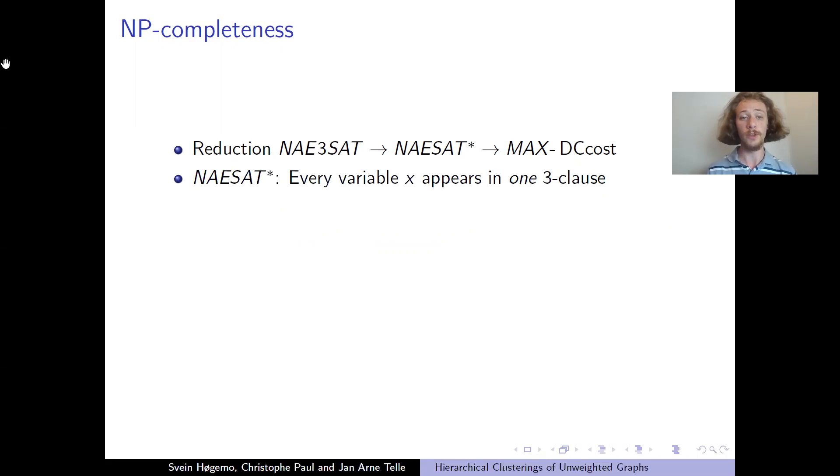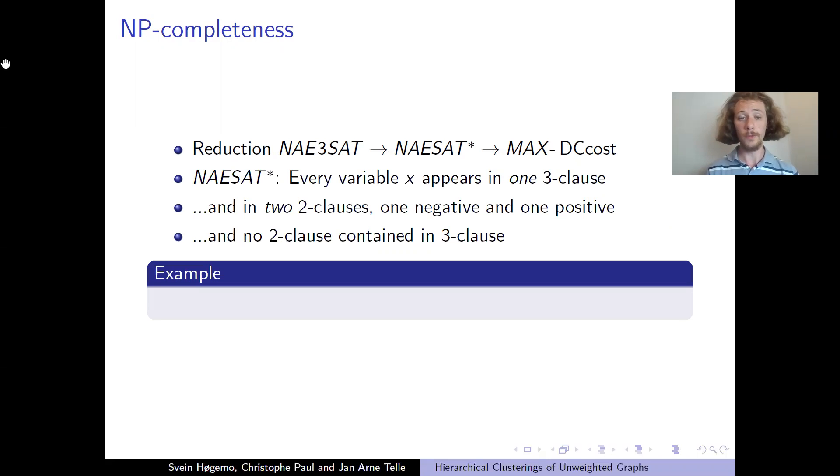An instance of an NAE-3SAT* instance looks like this. Every variable appears in exactly one 3-clause, and in exactly two 2-clauses, with one negative and one positive, and no 2-clause contained in a 3-clause. And as a toy example, we'll just look at this smallest possible NAE-3SAT* instance, which has one 3-clause and three 2-clauses.